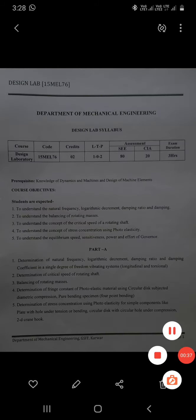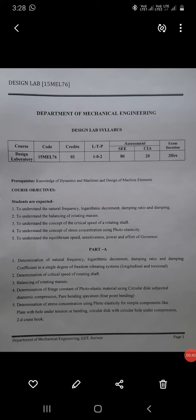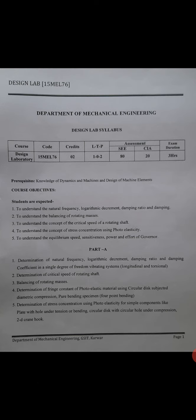As you can see on the screen, the design lab syllabus and course objectives: students are expected to understand natural frequency, log decrement, damping ratio, and damping. Second, to understand the balancing of rotating masses. Third, to understand the concept of critical speed of a rotating shaft. Fourth, to understand stress concentration using photoelasticity. And fifth, to understand the equilibrium speed, sensitiveness, and power effort of a governor.